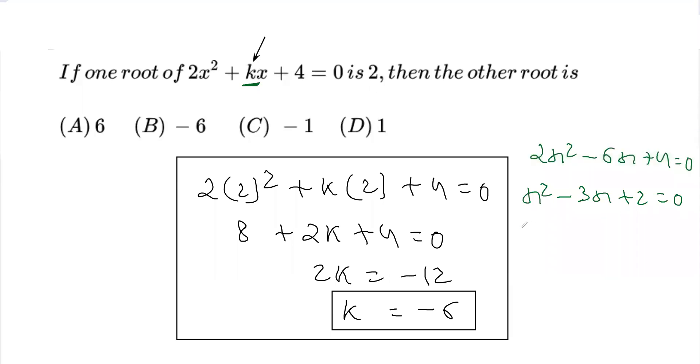Now we can do middle term splitting to factorize this. So, x² - 2x - x + 2 = 0.